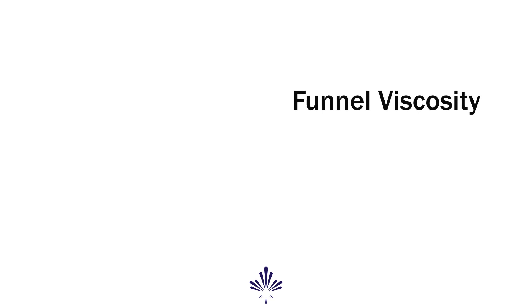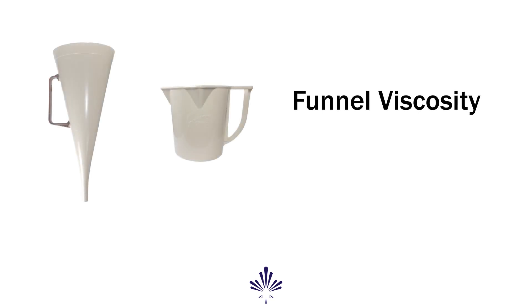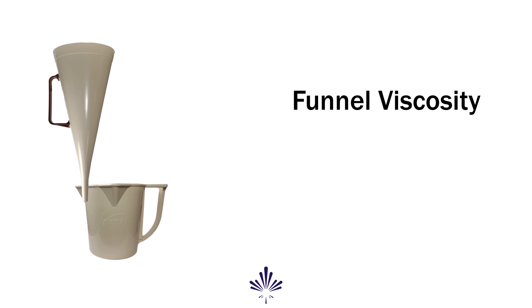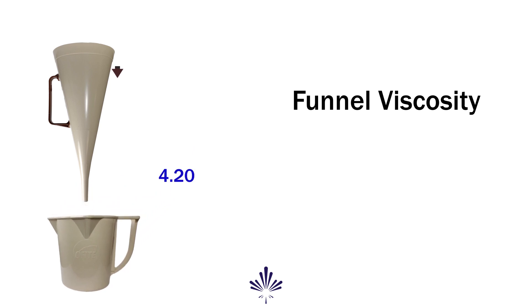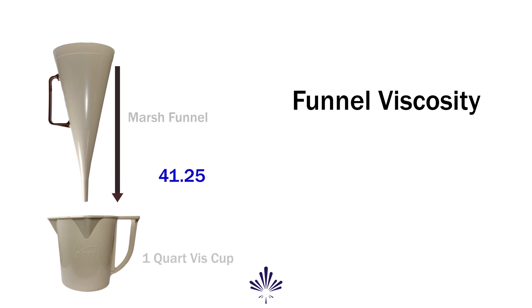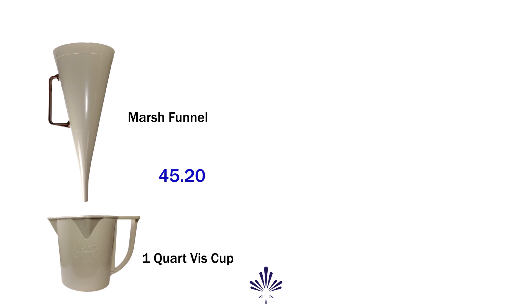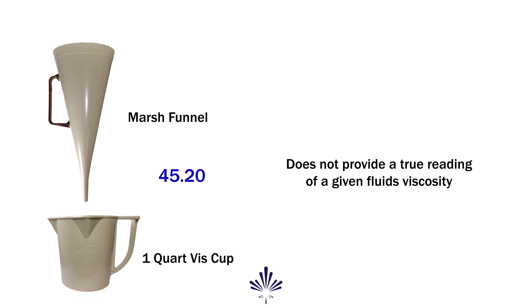A common method to measure viscosity on a rig site is termed the funnel viscosity. Funnel viscosity is determined by recording the amount of time it takes to pass a fixed volume of mud — one quart — through a marsh funnel. It is a quick check that can show trends or changes, but oftentimes is over-emphasized and relied upon too much. Because viscosity is a function of both temperature and pressure, funnel viscosity falls short of providing a constant and accurate measurement of a given fluid's true viscosity.